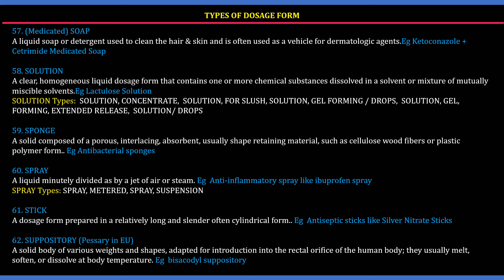59. Sponge: A solid composed of porous interlacing absorbent, usually shape-retaining materials such as cellulose, wood fibers, or plastic polymer. Example: antibacterial sponges. 60. Spray: A liquid minutely divided by a jet of air or steam. Example: anti-inflammatory spray like ibuprofen spray.